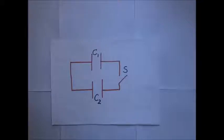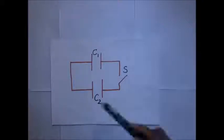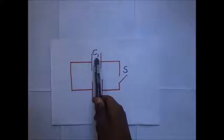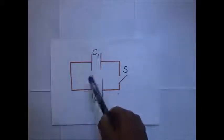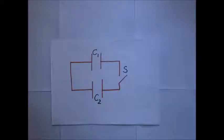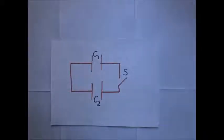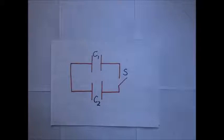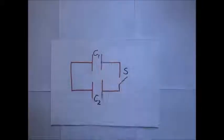Why is the final energy less? Because when charge flows from one capacitor to the other to normalize the potential difference, some of the energy is dissipated as heat in the connecting wires. That energy dissipated as heat in the connecting wires is what accounts for the decrease in stored energy after connecting the two capacitors.